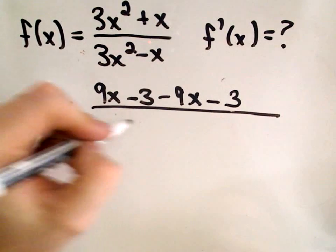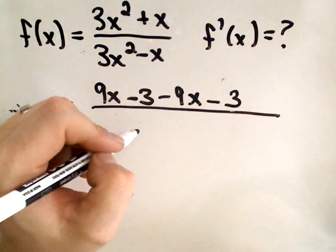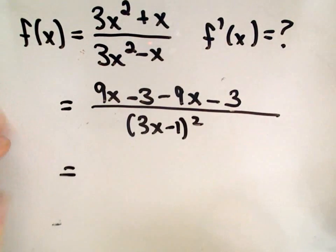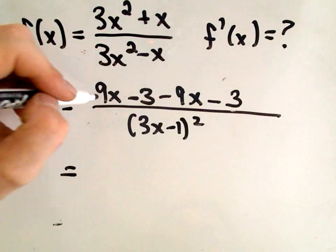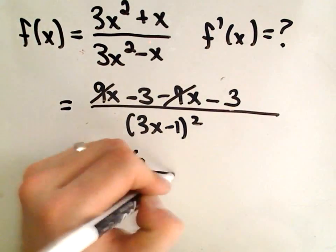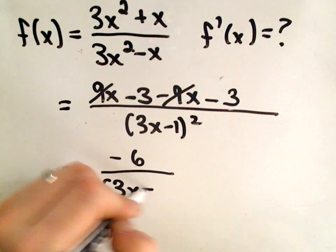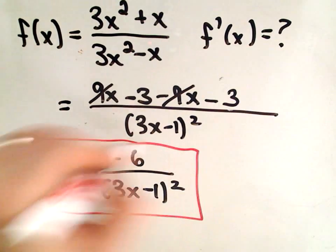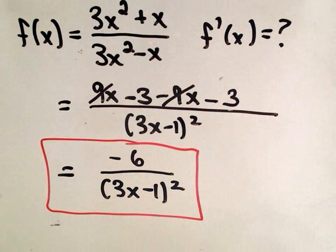Okay, and then we still have the denominator being squared, which was 3x minus 1 squared. So now simply, if we simplify the numerator, the 9x and the 9x will cancel, negative 3 and negative 3 is negative 6, over 3x minus 1 squared. That's the good thing about multiple choice, is I was looking at the solution and saw clearly something was wrong.